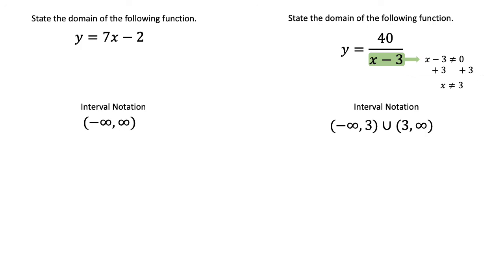And the second, in this case, you have a denominator where x cannot equal positive 3. So the interval notation will range from negative infinity to positive 3, and then there will be a union with positive 3 to positive infinity.